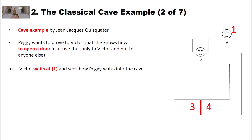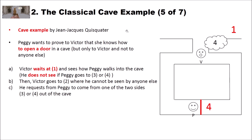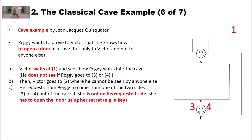In the first step, Victor waits at position one and sees that Peggy walks into the cave. He cannot see if she walks to the left or to the right side. Then Peggy walks to one of the two sides — in our example to side three. Then Victor goes to position two, where he cannot be seen by anyone outside the cave. He then requests Peggy to come out from one of the two sides, three or four. Peggy has the secret key and can open the door; if she is not on the requested side, she has to open the door using the secret.